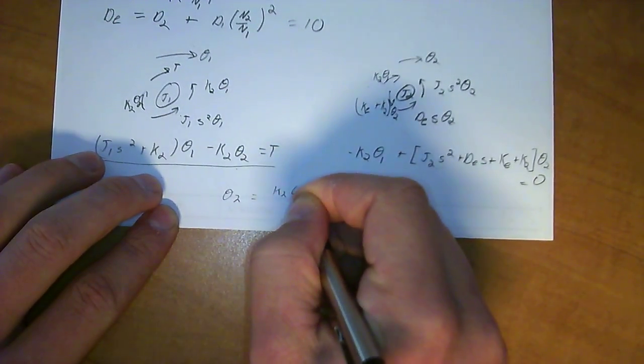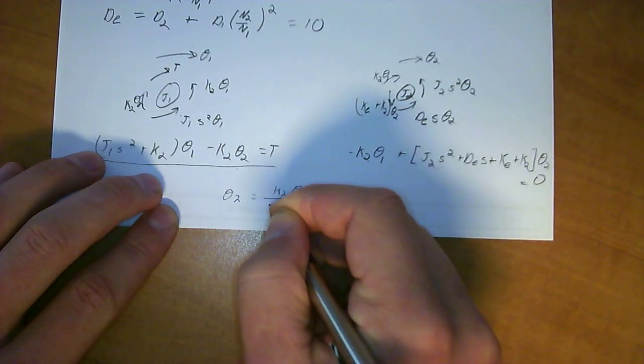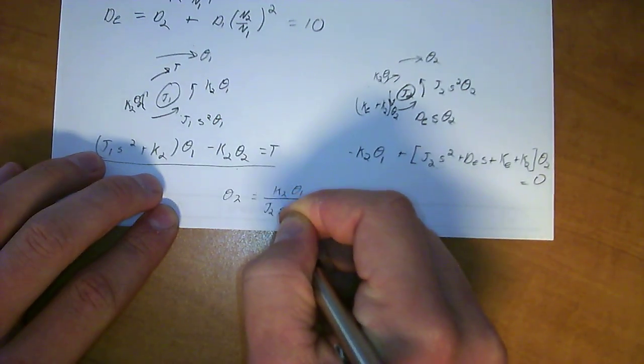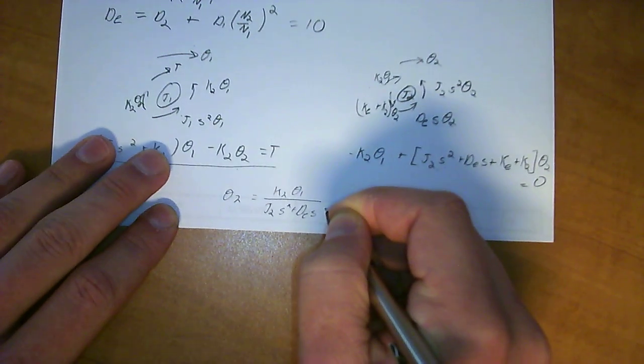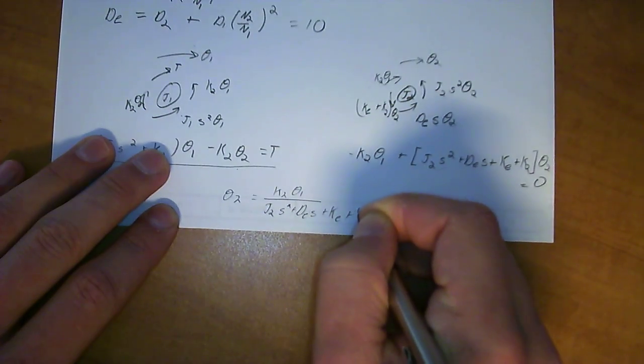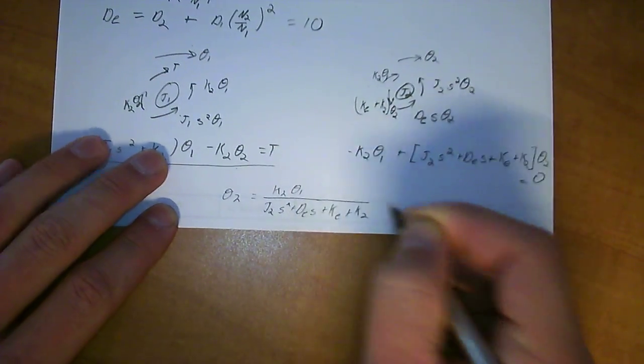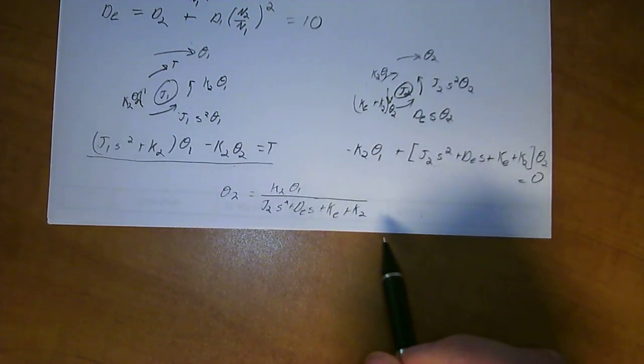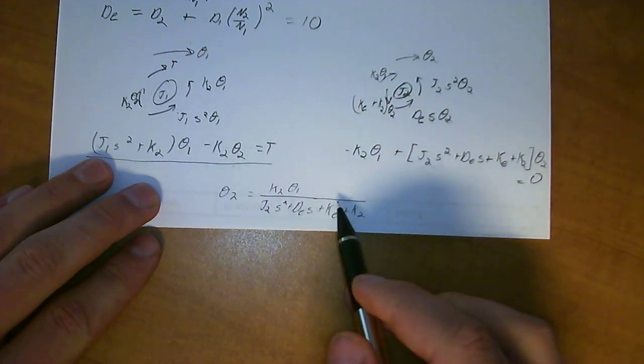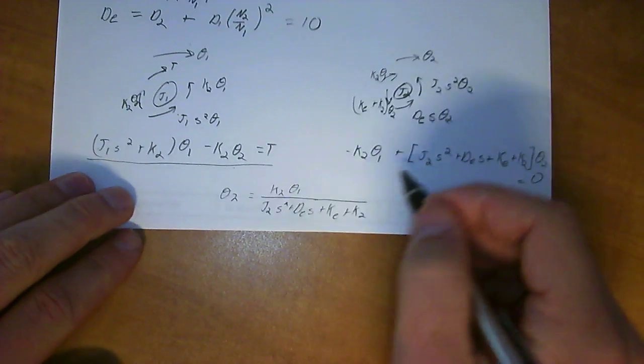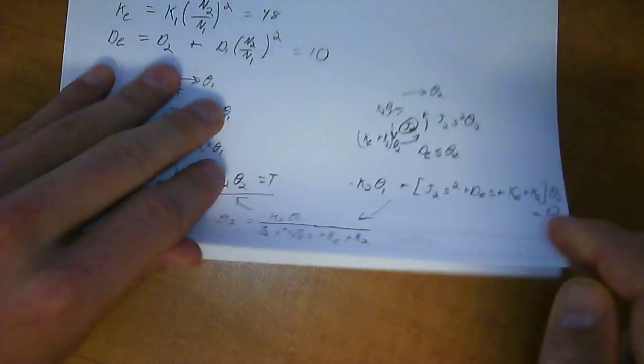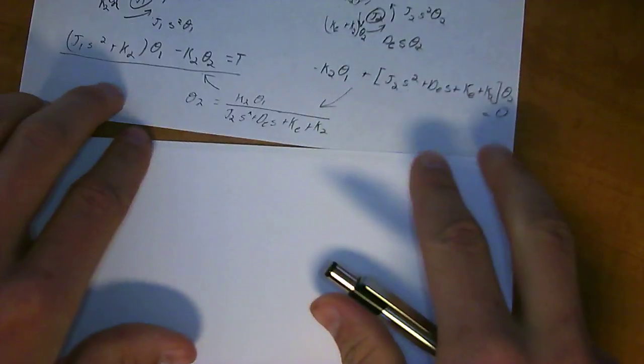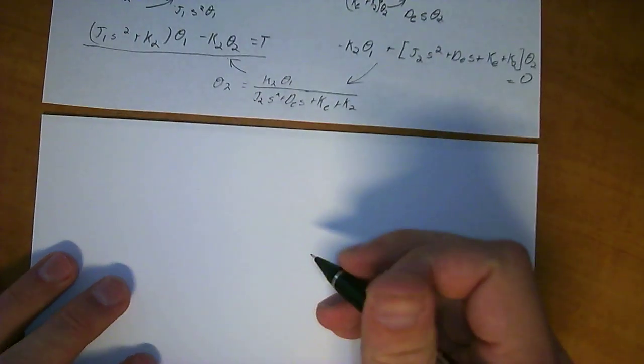So we can do that. And I'm going to go ahead and make Theta2 is equal to K2 Theta1 all over J2 S squared plus D S plus KB plus K2. And that's solving this equation over here. Then you go ahead and sub this into this equation. So this goes here and then that subs back into there. We'll continue that on the next page.